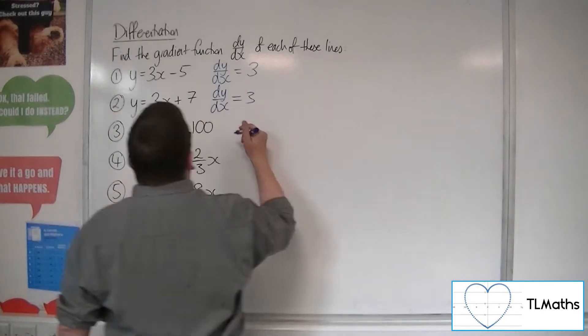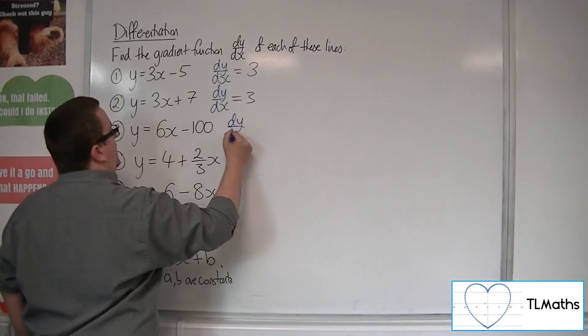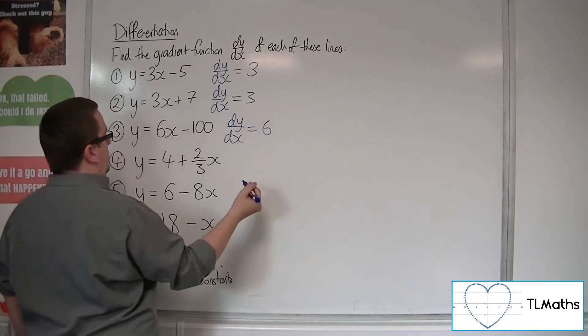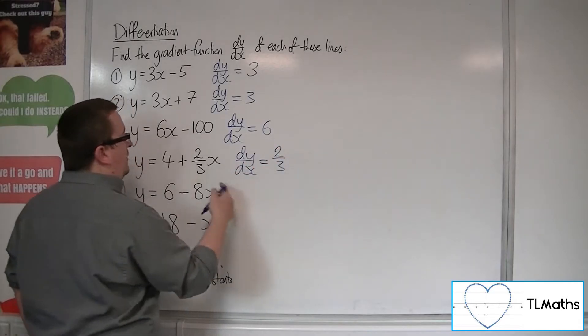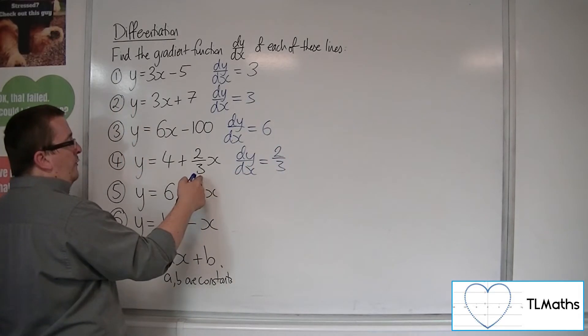Number 3, dy by dx is just going to be 6. Number 4, dy by dx is going to be 2/3, because it's the coefficient of the x we're looking for, remember.